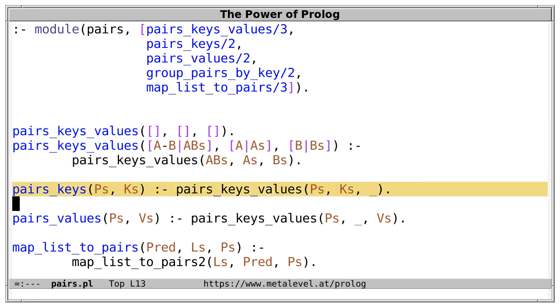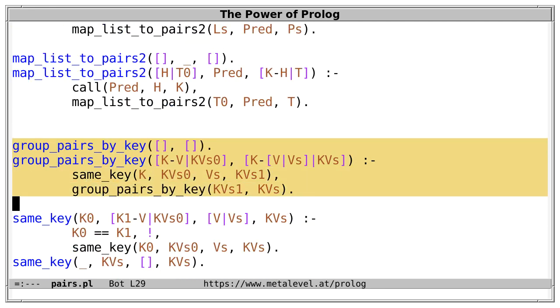As a specialization of this general relation, we have pairs_keys relating a list of pairs to their keys, and analogously pairs_values for the values. There's also group_pairs_by_key, which works on a key-sorted list of pairs and groups the values that have the same key.